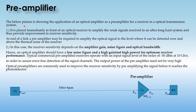The preamplifier is placed immediately in front of an optical receiver to amplify the weak signal received in an ultra-long-haul system, thus providing improvement in receiver sensitivity. At the end of the link, a preamplifier may be required to amplify the optical signals to the level where they can be detected above the thermal noise of the receiver.